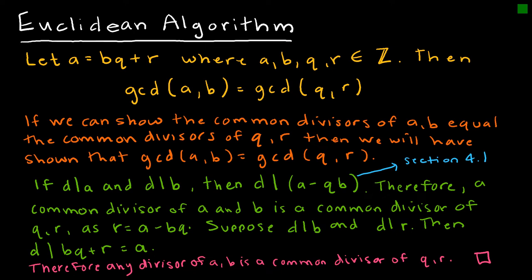But why does this work? So if I want to prove this, then I want to show that the common divisors of A and B are equal to the common divisors of Q and R. Because if all of those common divisors are equal, then we know that the greatest common divisor of each is equal, because all of the divisors are equal.